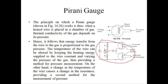A resistance bridge is employed, as you can see here, when the resistance of the wire filament is measured. The bridge is balanced at some reference pressure and the out-of-balance currents are used at all other pressures. Heat loss from the filament due to variation in ambient pressure can be compensated. One of the gauges whose pressure is to be measured is connected to a vacuum source and the other is evacuated and sealed.